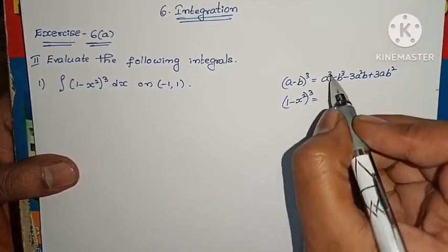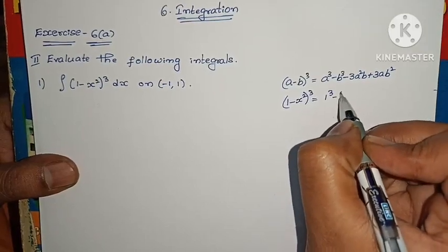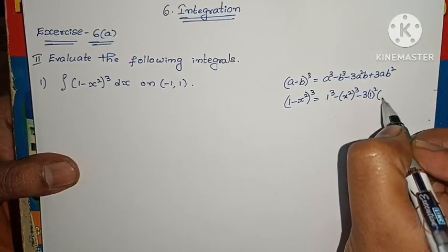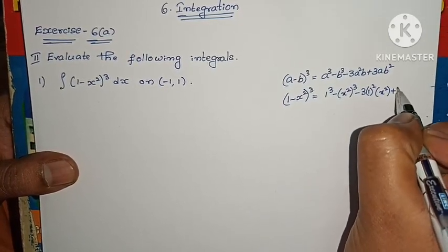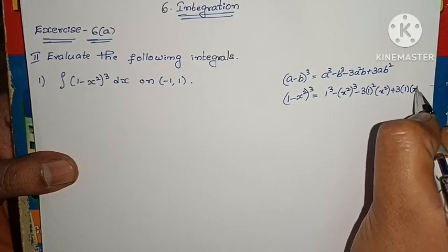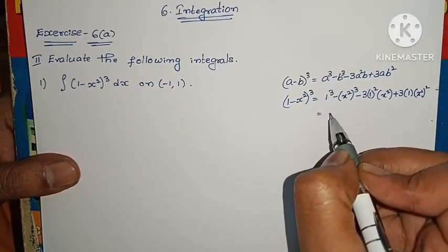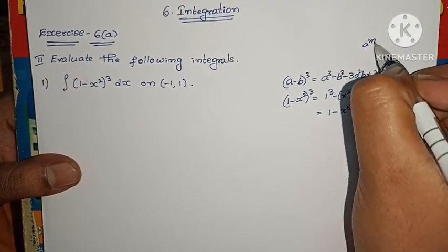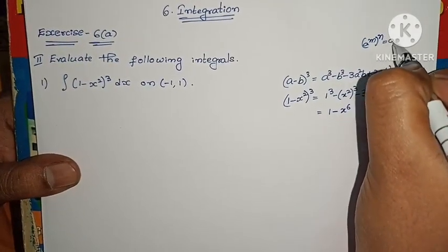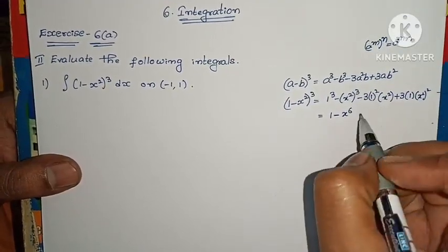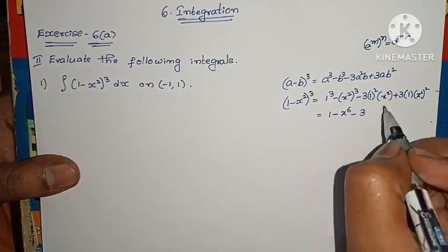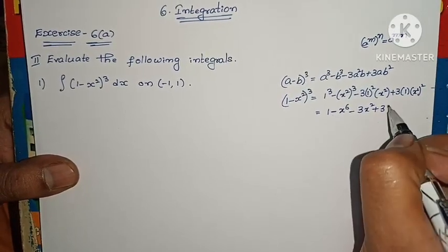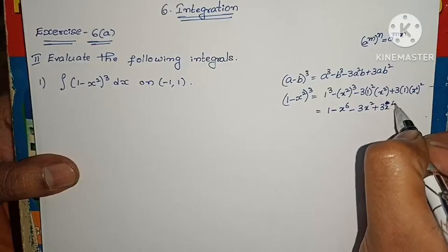Now for (1 minus x squared) whole cube, substitute a equals 1 and b equals x squared. So we get: 1 cube minus x squared whole cube minus 3 times 1 squared times x squared plus 3 times 1 times x squared whole square. That gives us 1 minus 3x squared plus 3x to the power 4.